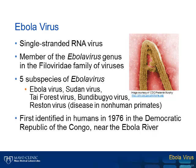Ebola virus was first identified in 1976 following two independent outbreaks of hemorrhagic fever in what is now the Democratic Republic of Congo and Southern Sudan. It is thought that the index patient was traveling along the Ebola River in the Democratic Republic of Congo when the exposure and infection occurred. Since the late 1970s, outbreaks of Ebola virus have been largely sporadic and have all been restricted to the African continent.